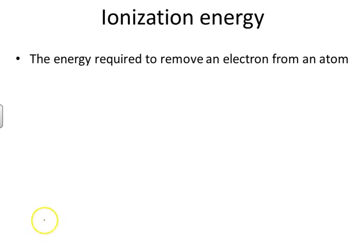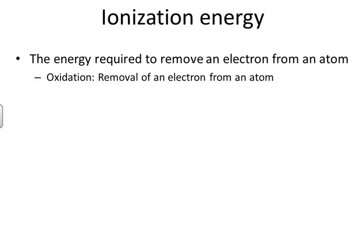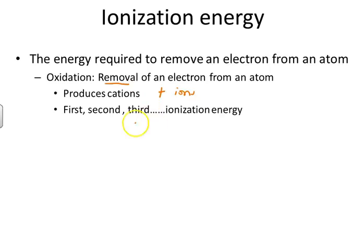Now let's look at ionization energy — the energy required to remove an electron from an atom to make an ion. The process of removing an electron is oxidation, and it always produces cations, which are positive ions. We also have successive ionization energies: the energy to remove the first electron is the first ionization energy, the second electron requires the second ionization energy, and so forth.